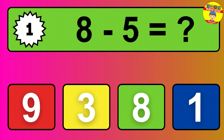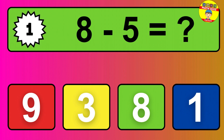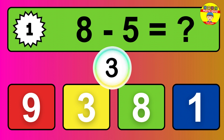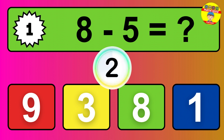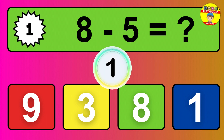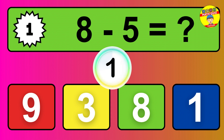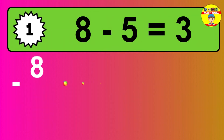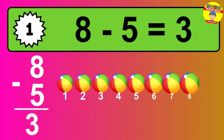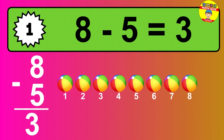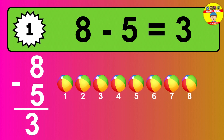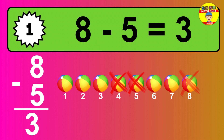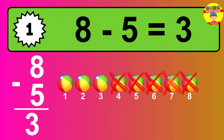Question 1: 8 minus 5 equals what? The answer is 8 minus 5 is 3. Let's count it: 1, 2, 3.